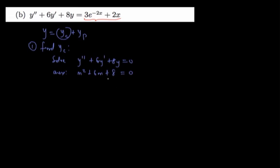When we solve the auxiliary equation, we get m₁ = -4 and m₂ = -2. Since we have two distinct roots, our yc is c₁e^(-4x) + c₂e^(-2x).